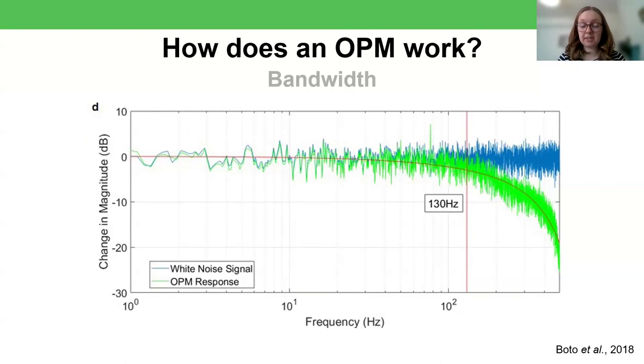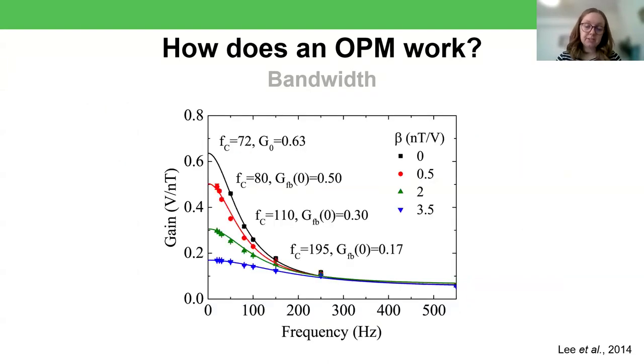One of the advantages of this kind of feedback system is that it can be used to create an OPM with a higher bandwidth. And so by that I mean, it can be used to make the sensor more sensitive to higher frequency signals. Because one of the disadvantages of OPMs by comparison to squids is that they're less sensitive to high frequency signals above around 150 hertz. So here's an example of a fairly early closed-loop system, where by implementing this closed-loop mode, they were able to increase their bandwidth up to 195 hertz.